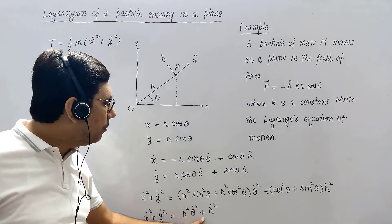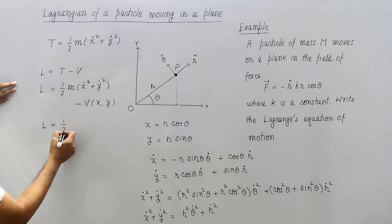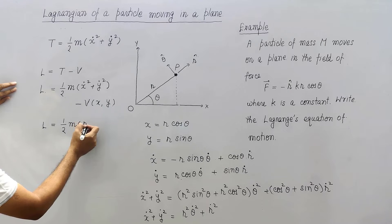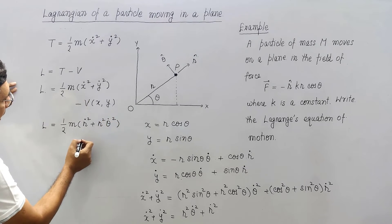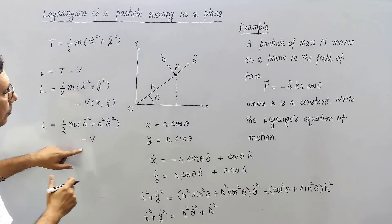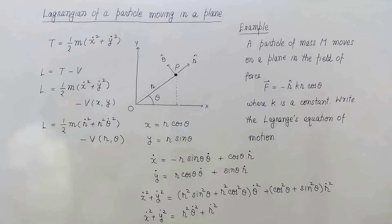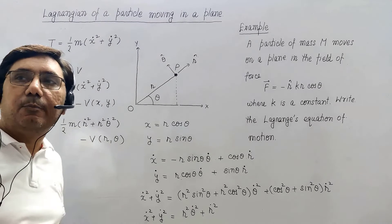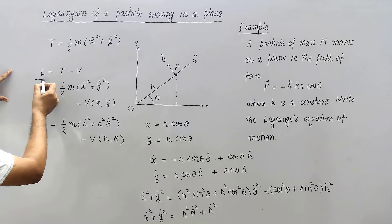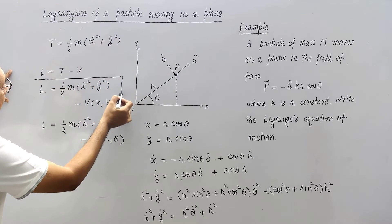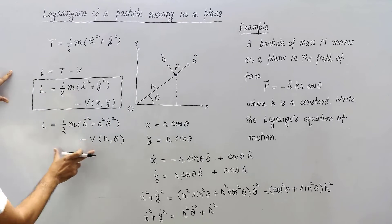Therefore, the Lagrangian in polar coordinates is: L = 1/2 m (r-dot squared plus r squared theta-dot squared) minus V(r, theta). This is the polar form of the Lagrangian. When a particle moves in a plane, you can write the Lagrangian either in Cartesian coordinates or in polar coordinates.